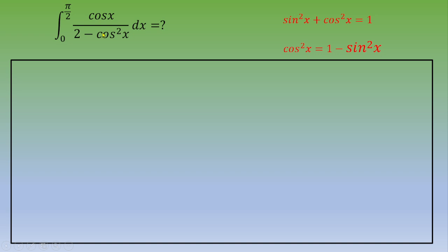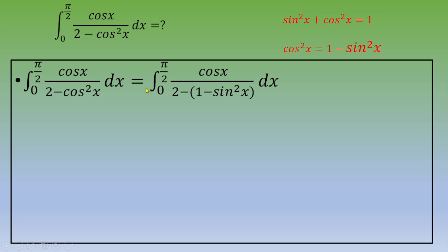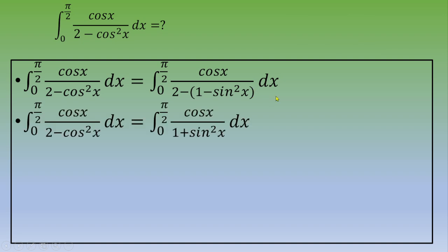So if you plug that in, you get integral from 0 to π/2 of cos x over 2 minus 1 minus sin² x dx. Now if you do the math, you got integral from 0 to π/2 of cos x over 1 plus sin² x dx.